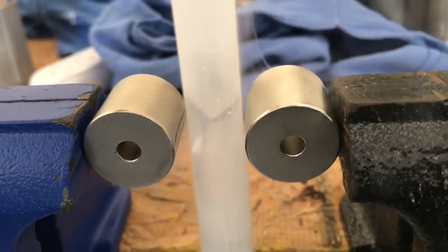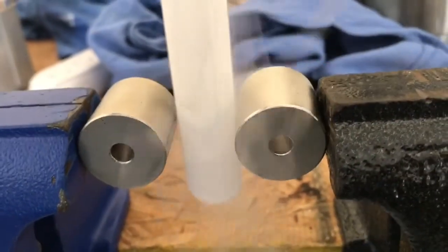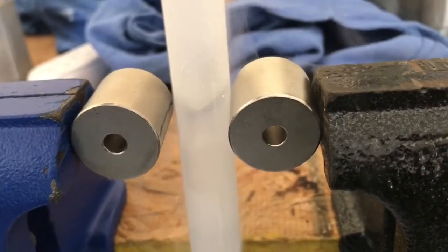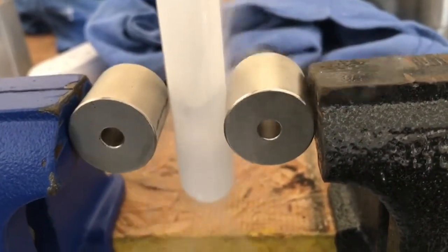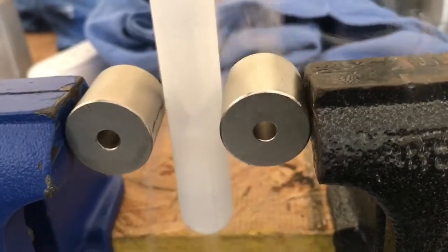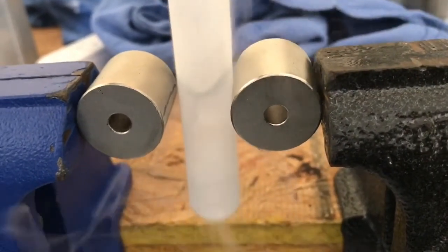Oxygen being suspended between two magnets in the test tube. You can see the bluish tinge in it. That's the natural color of liquid oxygen.